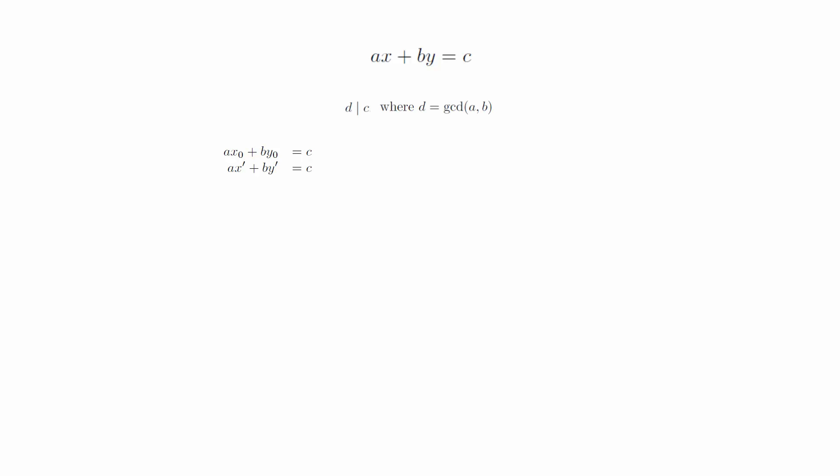Now suppose that there is another solution x prime y prime to the equation ax plus by equals c. We can set these two equations equal to each other and divide both sides by d. Notice that the terms inside the parentheses are integers since d divides both a and b. We can then rearrange the equation to get it into this form.